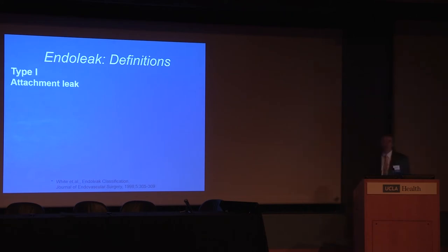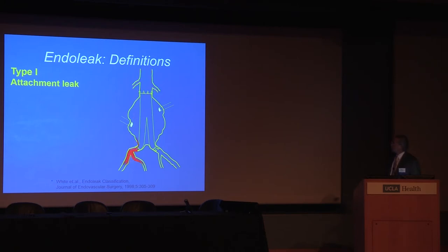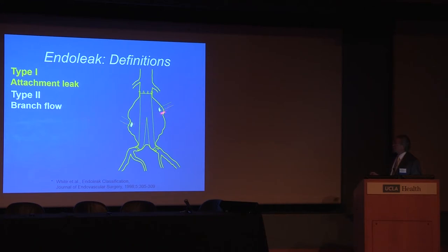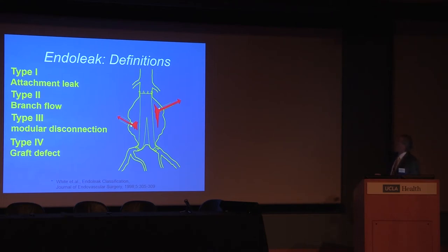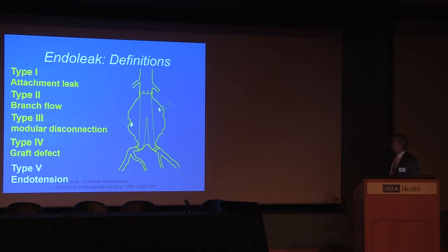The most common cause of aneurysm enlargement is an endoleak. Endoleaks are classified as Type 1 — either proximal Type 1a or distal Type 1b. Type 2 is branch flow between two branches of the aorta, most often a lumbar and the inferior mesenteric. Type 3 is leakage around the junction or through the graft. Type 4 is a graft defect allowing extravasation of serum or blood. Type 5 is endotension, which we really don't fully understand.